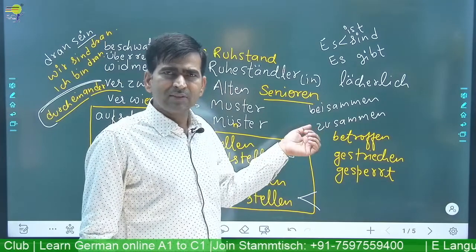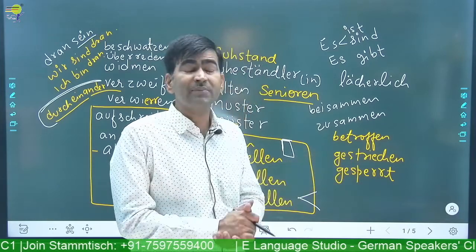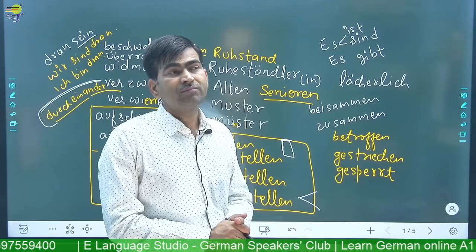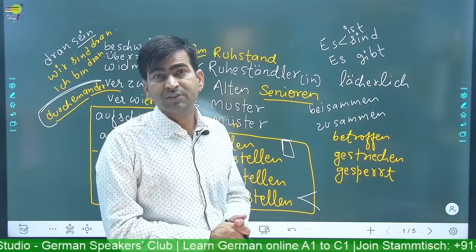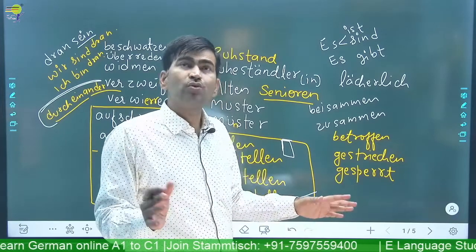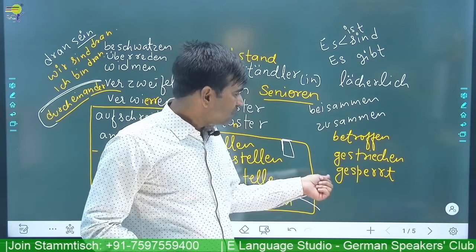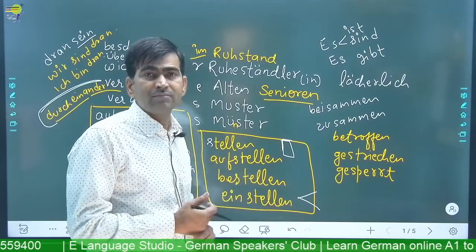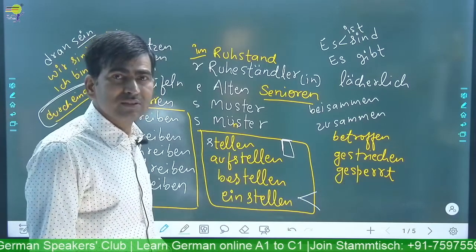Beisammen — also together. Betroffene means affected — wegen Corona wurden also viele Firmen betroffen. Gestrichen means canceled — zum Beispiel die Flüge wurden gestrichen. Und gesperrt — blocked. Meine Karte wurde gesperrt, oder die Straßen gesperrt — blocked.